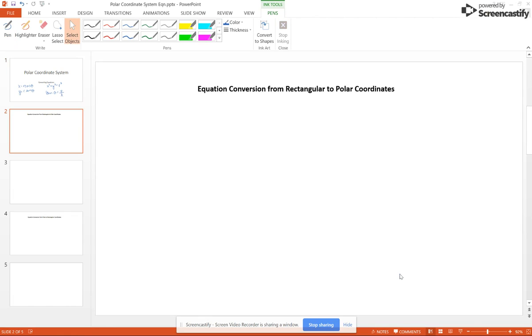Let's start with going from rectangular to polar. In this case, you want to solve for R, R squared, or theta – whichever is most convenient. For example, if I have Y equals negative 2X plus 3, then Y is R sine theta, so I put that in for Y. Negative 2X becomes negative 2R cosine theta, so I put that in for X.